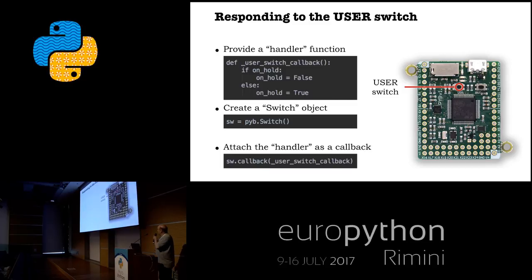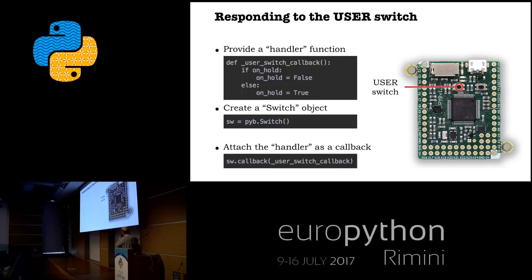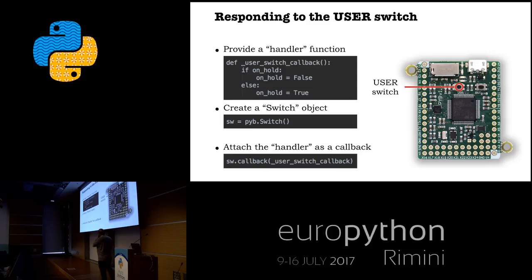How do we interact with the user button? There are two switches: a reset button which reboots the board, and a user switch — both brought out as little brass buttons on the aluminum casing. To use a button, I provide a handler function — the work I want done when it's pressed — create a switch object, and attach the handler via a callback method. In this case I'm just setting a control variable which prevents recording from taking place. I create a switch object from the Pyboard module and invoke the callback method providing my function.